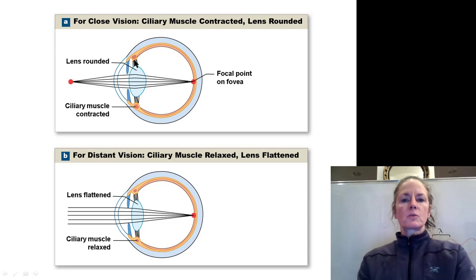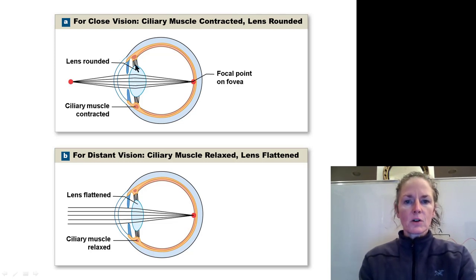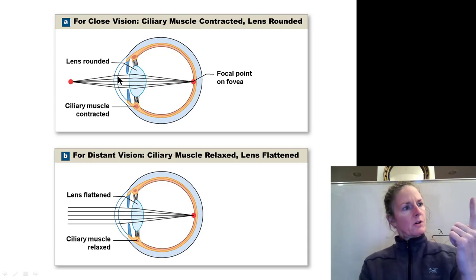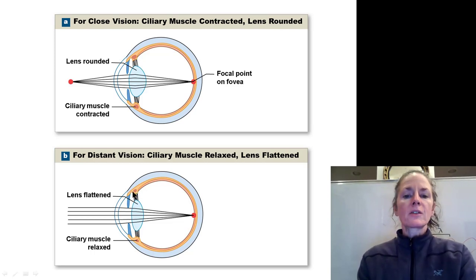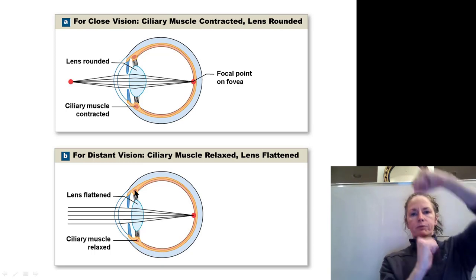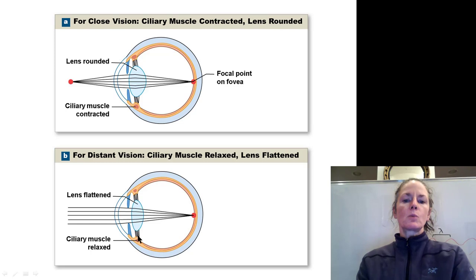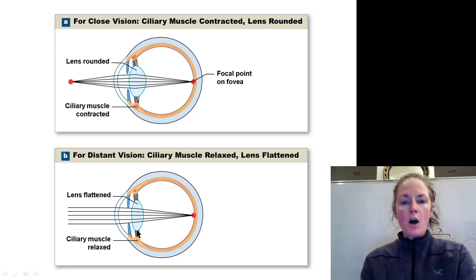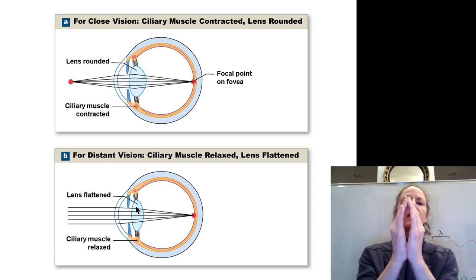When the ciliary muscle contracts and moves closer to the lens, it makes the suspensory ligaments less tight, giving them laxity. That allows the lens to assume a spherical shape, so we can focus on things close to us. When we want to see things far away, we relax the ciliary muscle. It draws away from the lens, pulling the suspensory ligaments taut, which moves the lens from a spherical shape to a flatter shape, allowing us to see things far away.